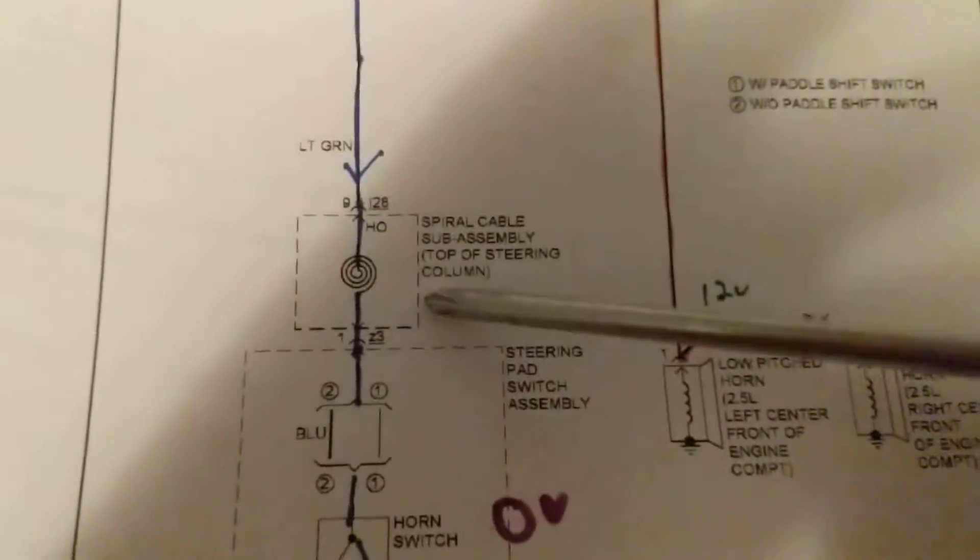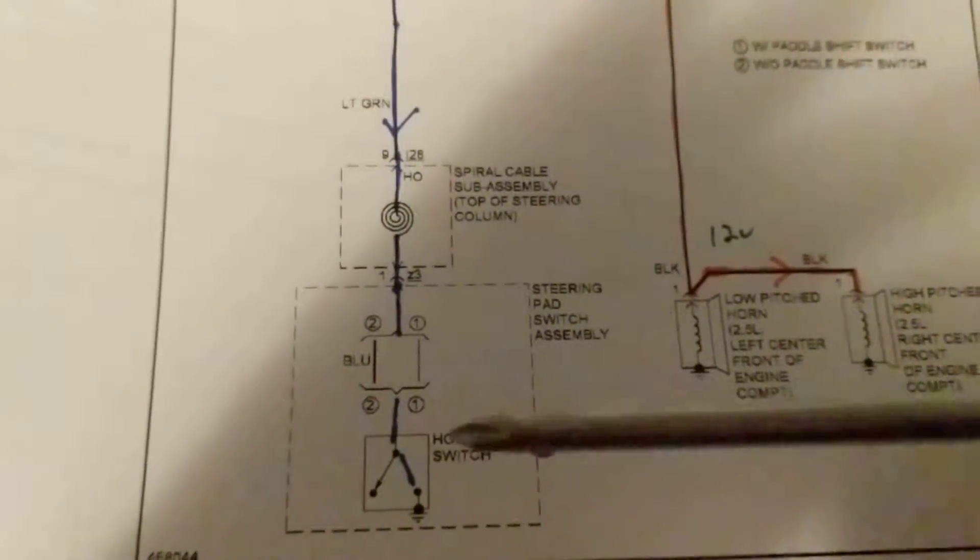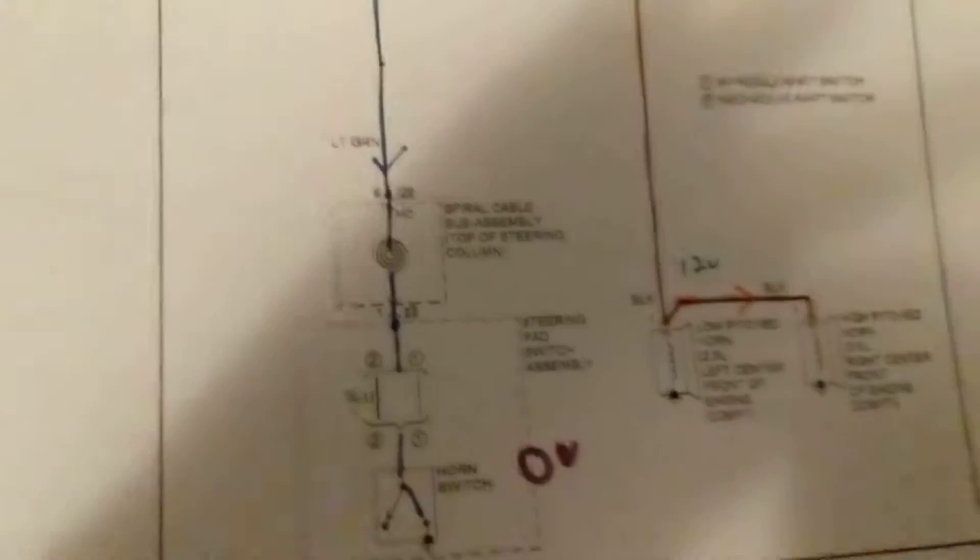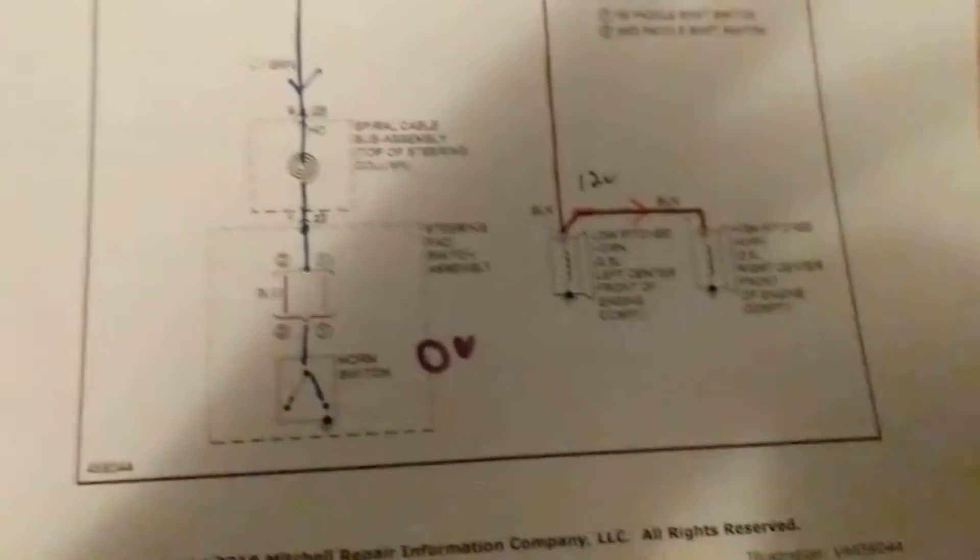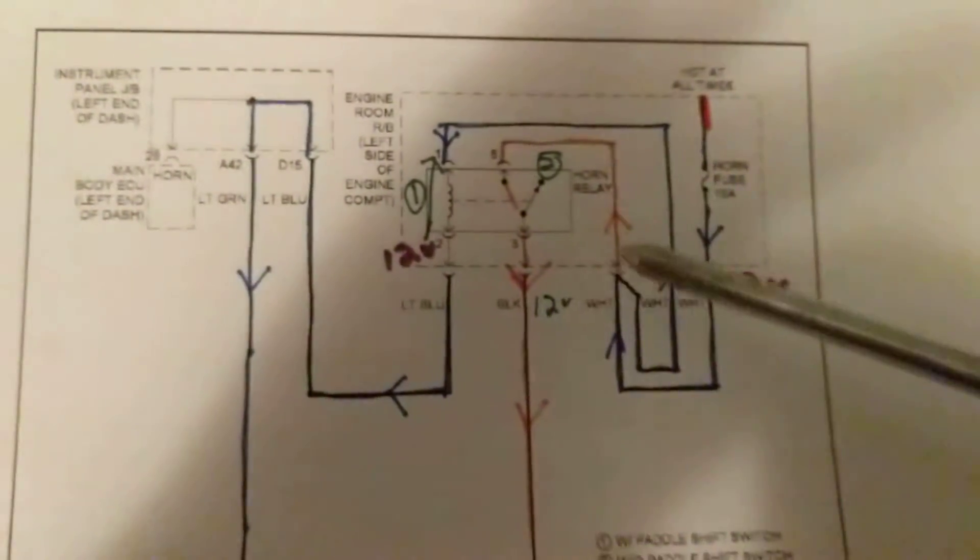And usually the case is the clock spring might be the problem, or the horn switch might be the problem, because this is what we hit all the time on the steering wheel. So after a while, they tend to go bad, obviously. So if we want to, the first thing we can always jump the relay.